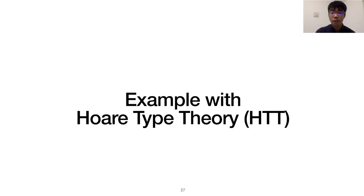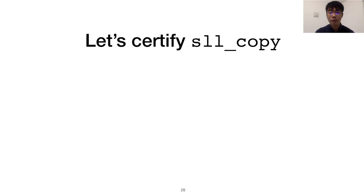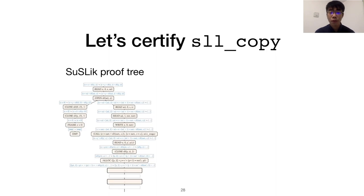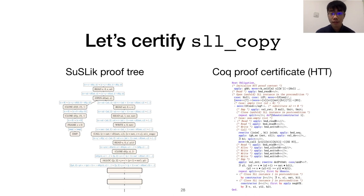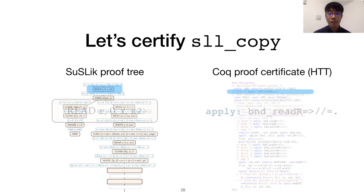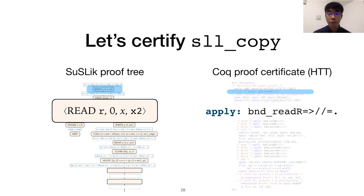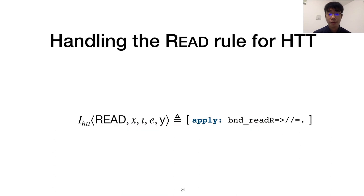Using the instantiation for Hoare type theory, I'll now show how these features help our evaluator certify the list copying example. On the left is part of the synthesis proof tree, with the rest of the tree truncated at the bottom, and on the right is an HTT proof certificate. Some steps are easy to translate, like this read rule of SSL and its HTT counterpart. So, our proof step interpreter just needs to map the rule to HTT's bindReadR lemma.